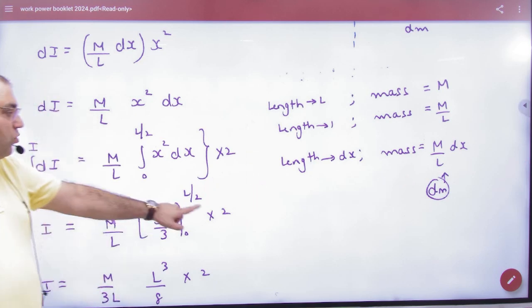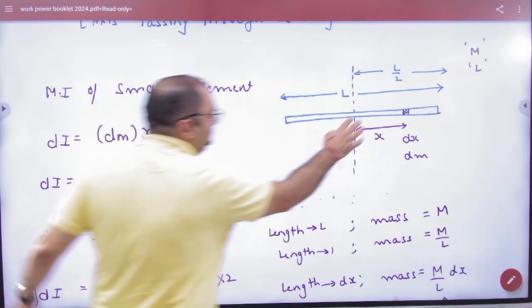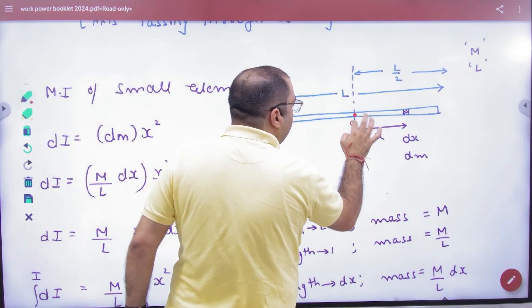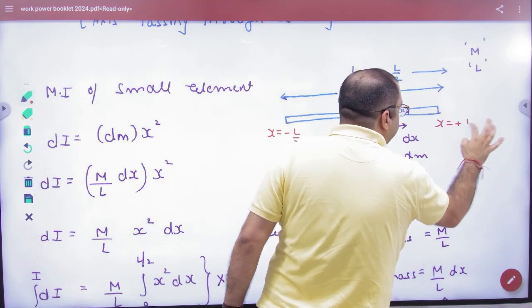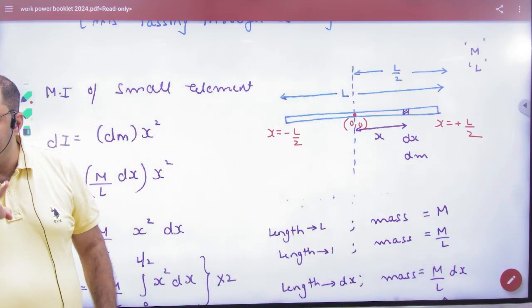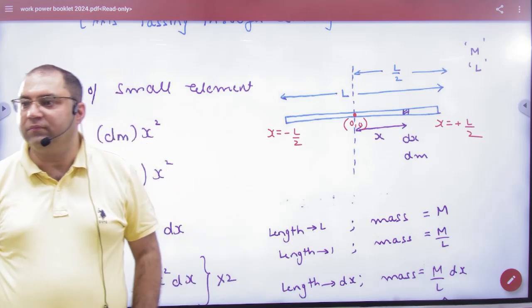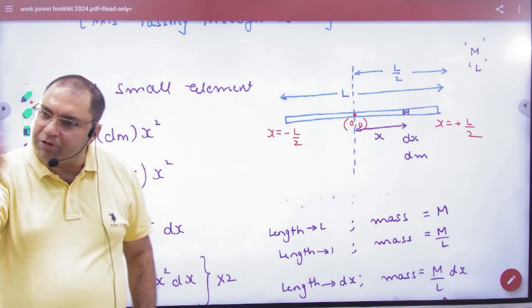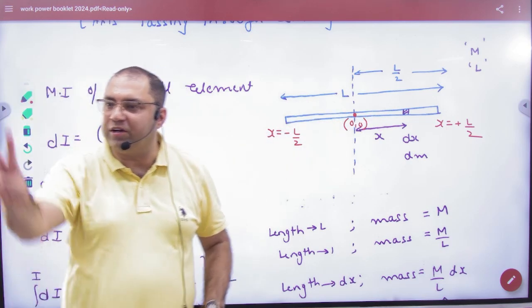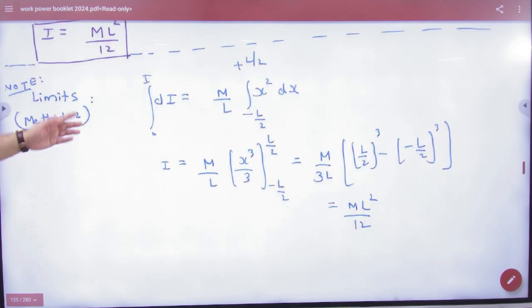But if you want - don't multiply by 2, there's another method you can use. Take this point as origin. Then this coordinate of x becomes minus L by 2, and this point becomes plus L by 2. If you apply these limits - minus L by 2 to plus L by 2, answer will be the same. Don't apply 0 to L. Apply either minus L by 2 to L by 2, or just find half the rod, 0 to L by 2, and multiply result by 2 - same thing. My job is to tell you both ways you can put limits and get the same answer in both.